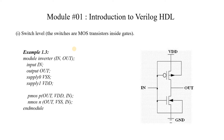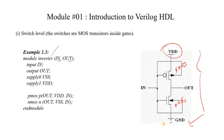In switch level modeling, we are given a design in the form of switches — here PMOS and NMOS acting as switches. If you see, this is an inverter circuit. We declare a module called inverter with one input, one output, and supply connections declared as supply data types. We then use the PMOS and NMOS switch statements. This is how we model a design at the switch level.